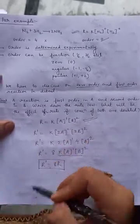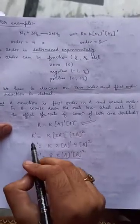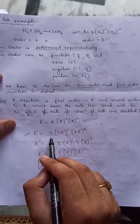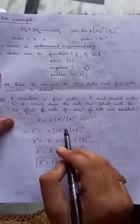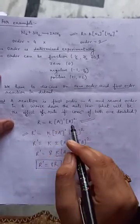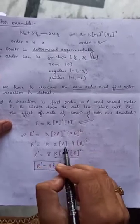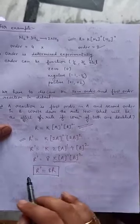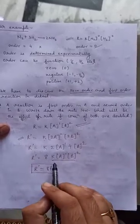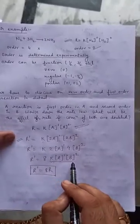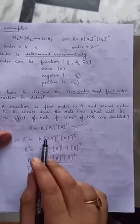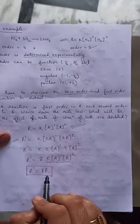Now we have to calculate the effect on rate. Let the new rate be R dash. It will be equal to K. As the concentration of both are doubled, A will become 2A and B will become 2B. So it will be 2A to the power 1, 2 squared is 4, B to the power 2. So 2 into 4 is 8, K A to the power 1, B to the power 2. Now this K A to the power 1 and B to the power 2 is R. So R dash equals 8R.